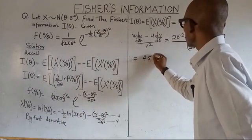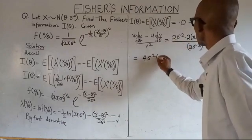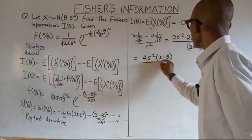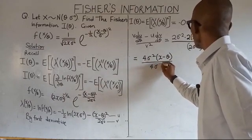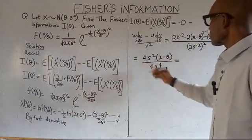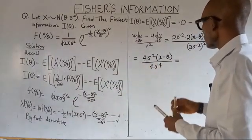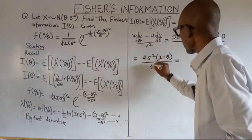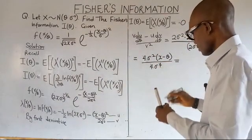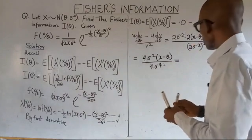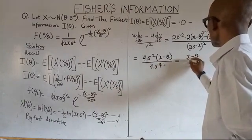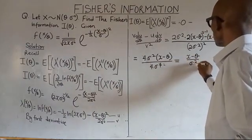Simplifying the result: we have four sigma squared multiplied by (x minus theta) in the numerator, all over four sigma to the power four. The fours cancel and two powers of sigma cancel, leaving us with (x minus theta) over sigma squared.